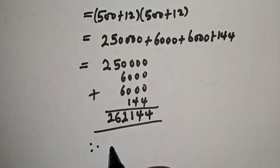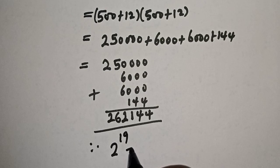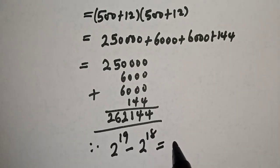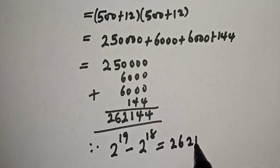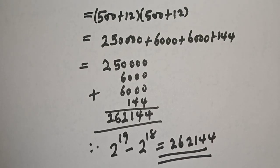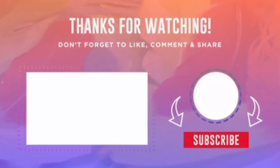Let's add everything together: 250,000 plus 6,000 plus 6,000 plus 144. Therefore, 2 raised to power 19 minus 2 raised to power 18 is equal to 262,144. So, if you enjoyed the class, please don't forget to like, share, comment, and subscribe. Thank you.